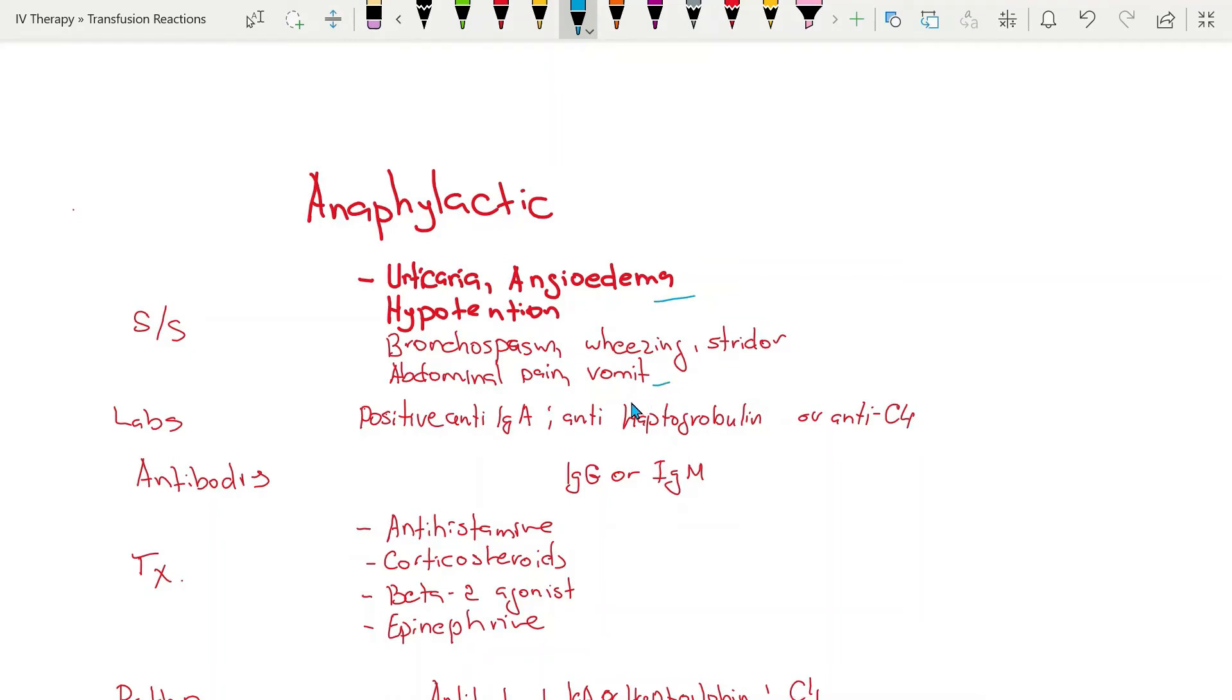Labs that can be performed before the transfusion would be positive immunoglobulin A, anti-haptoglobulin, and anti-C4 antibodies. We're talking about immunoglobulin G or immunoglobulin M that will activate the mast cell.